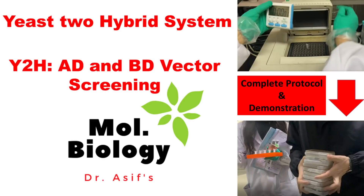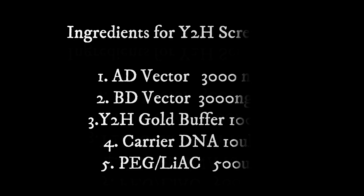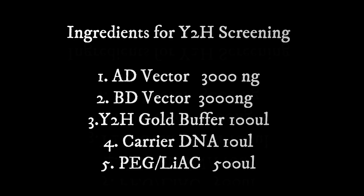Hello guys, in this video tutorial we will be testing whether AD and BD vectors interact or not. In the previous video we have already made AD and BD vectors. Yeast two-hybrid system is used to check two protein interactions using AD and BD vectors, which we have already cloned in the previous experiment.